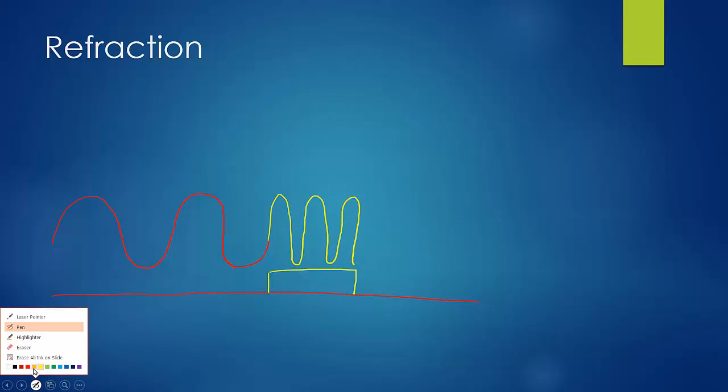And when it try to enter the glass block here, what will happen is the wavelength will be shorter. And right after they leave the region, they will go back to normal. So that's how the refraction looks like.